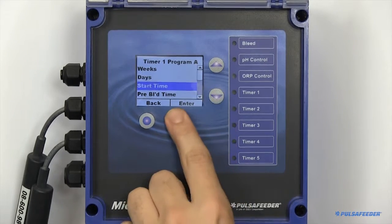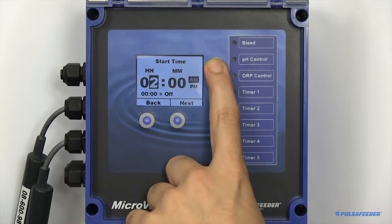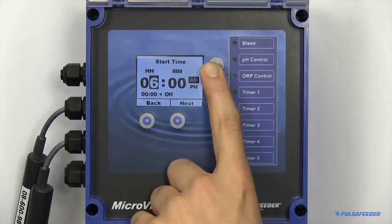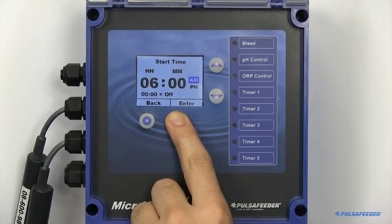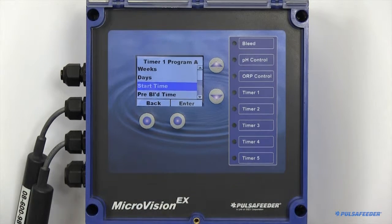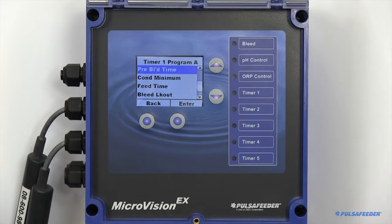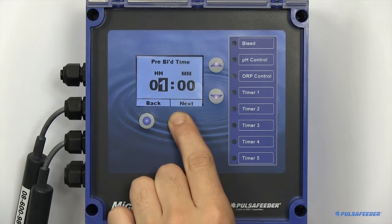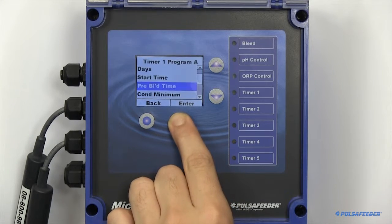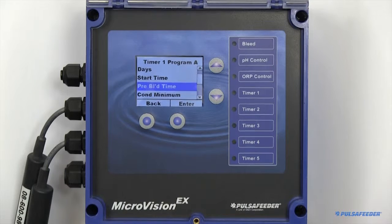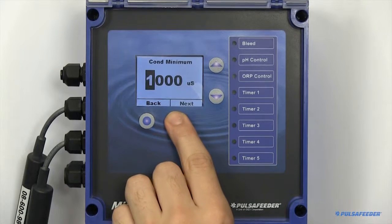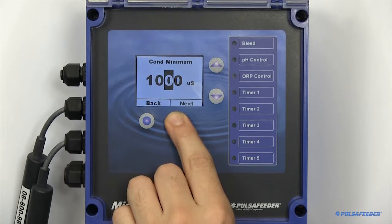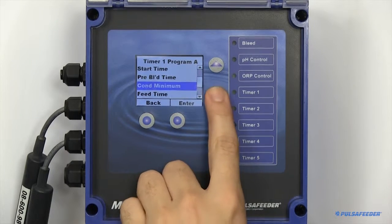The start time is when you would like to either begin your feed cycle, or a prebleed, if applicable. A prebleed time is the maximum amount of time you would like the bleed function to be force enabled prior to a feed cycle. If there is a minimum conductivity you would like the tower to reach to immediately begin your feed cycle, this can also be set.